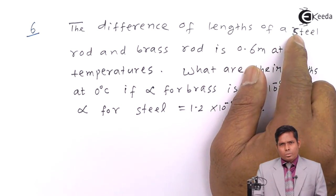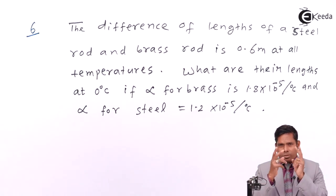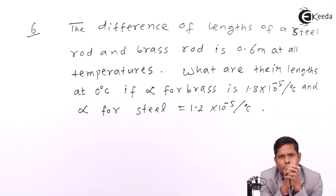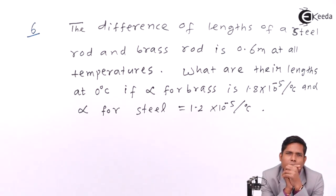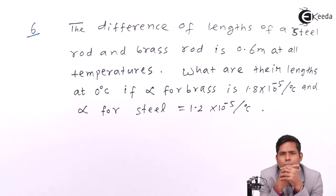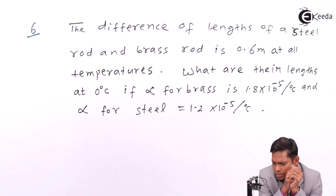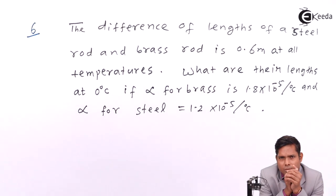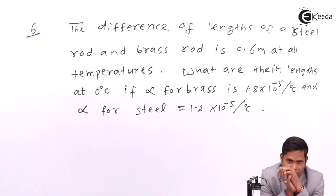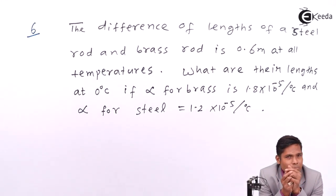We have to find two things: the length of brass and the length of steel at 0°C. That means we have two unknowns. If we have two unknowns, we will require two equations to solve. One equation is already there in the first condition — the two rods maintain a difference of 0.6 meters. So let the length of brass at 0°C be x and steel be y; x minus y (or y minus x) equals 0.6. This is equation number 1.